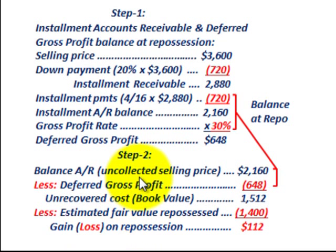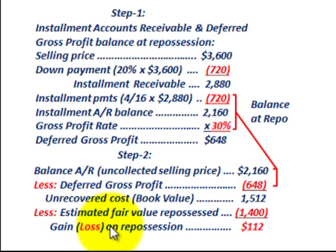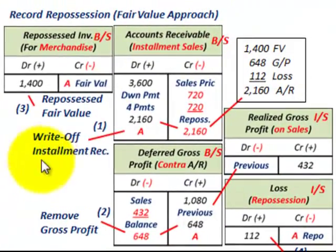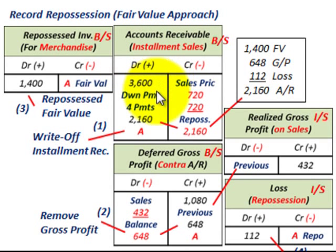In step two, based on your carrying amounts in accounts receivable and deferred gross profit, you determine any gain or loss. We had a loss because our estimated fair value was less than our book value. Had the estimated fair value been greater than our book value, there would have been a gain. Now let's look at how we record this repossession using the fair value approach.